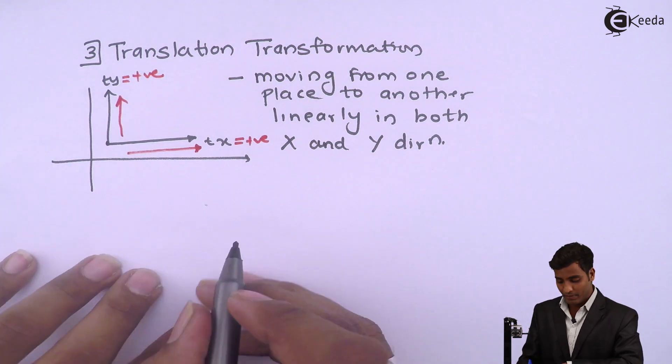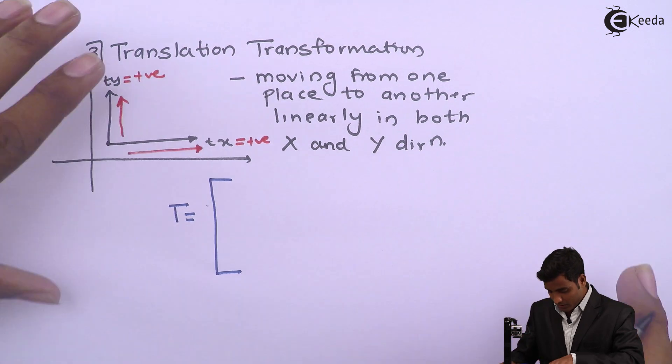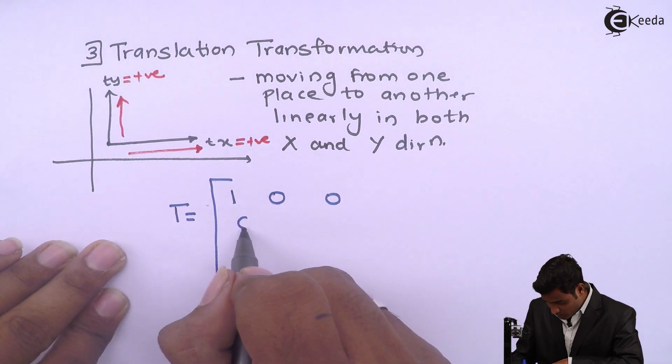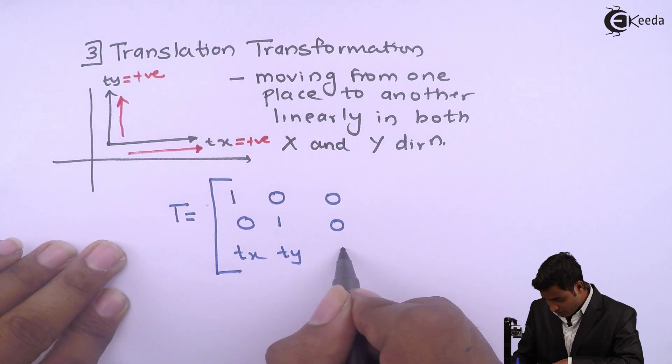Now the standard translation matrix which is given by T is equal to 1 0 0, 0 1 0, Tx Ty 1.